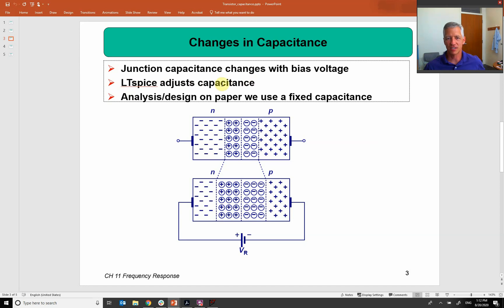LTSpice adjusts this capacitance a little bit. Whenever we're doing analysis design on paper, we're just going to use the fixed capacitance value. So our analysis is going to be off of the actual value a little bit because we're not taking into account the voltage adjustment of the capacitance.